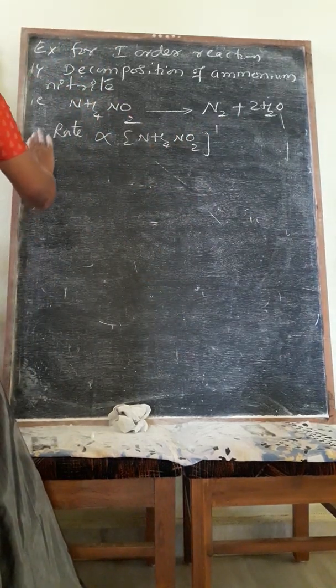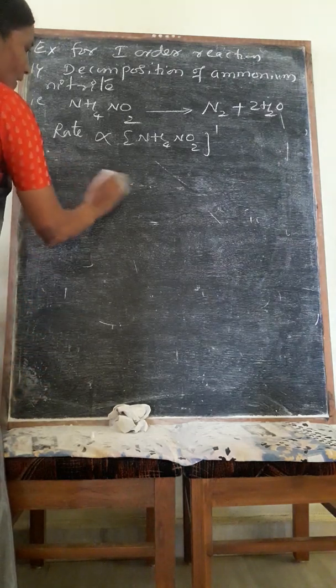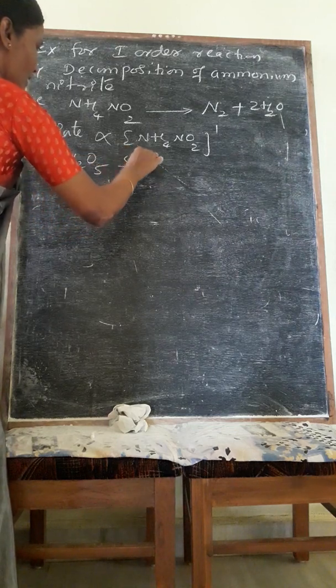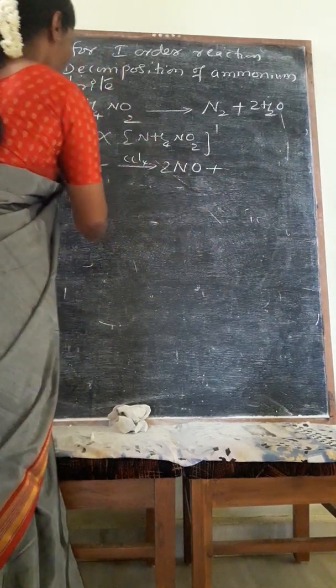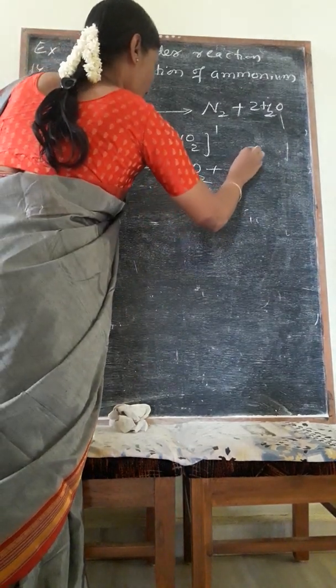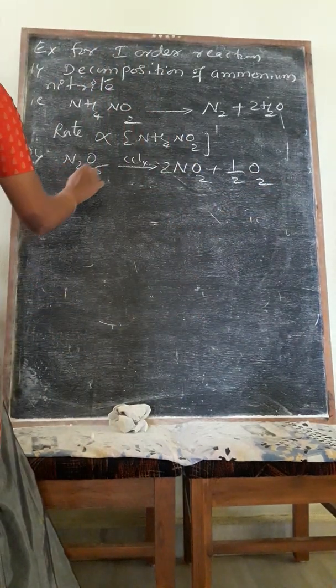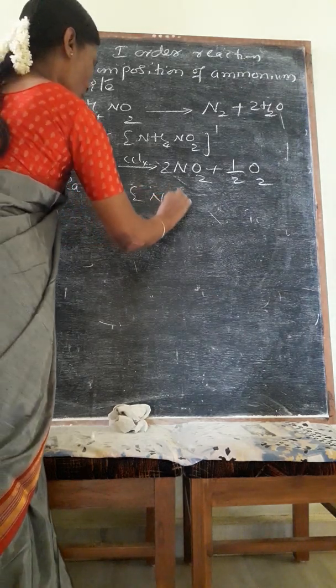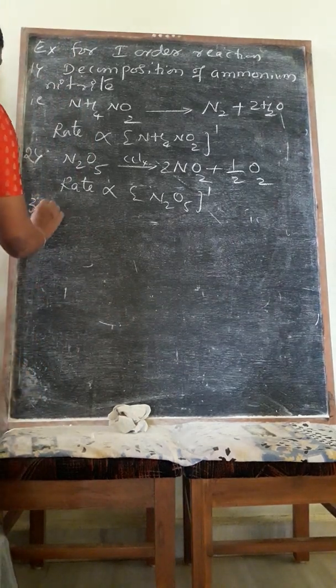One more example for first order reaction: N2O5 decomposition gives N2O4, nitrogen dioxide plus half O2. The rate is directly proportional to first power of the reactant N2O5.